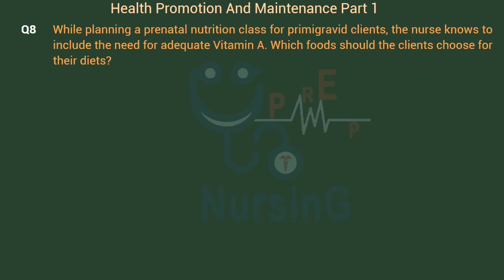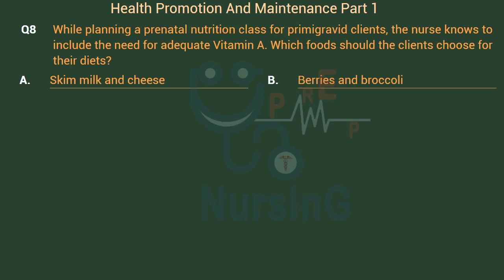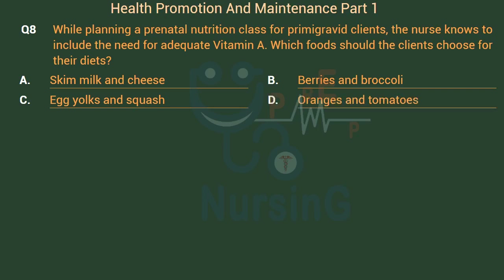While planning a prenatal nutrition class for primigravid clients, the nurse knows to include the need for adequate vitamin A. Which foods should the clients choose for their diets? Option A: Skim milk and cheese. Option B: Berries and broccoli. Option C: Egg yolks and squash. Option D: Oranges and tomatoes.